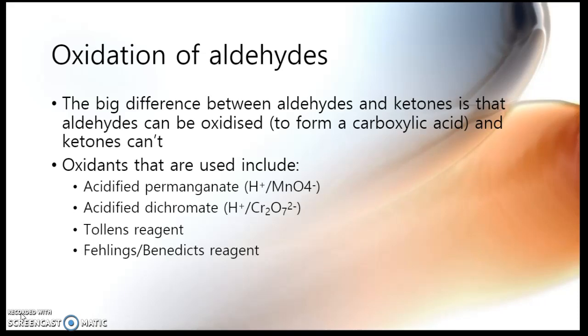And there are four possible oxidants that we can use to oxidise our aldehyde. We can use permanganate (H⁺/MnO4⁻) and dichromate (H⁺/Cr₂O₇²⁻), which we will use for pretty much every other oxidation reaction we're ever going to do. But we can also use two very specific reagents, called Tollens reagent and Fehlings reagent. Fehlings reagent is very similar to Benedict's reagent, which you may have used in biology to test for glucose.